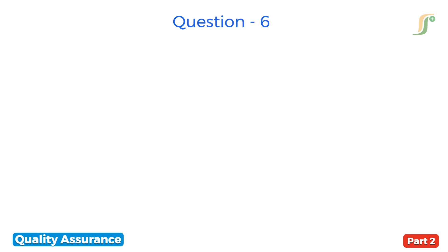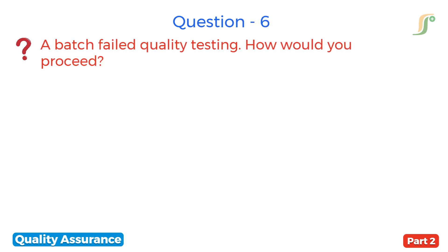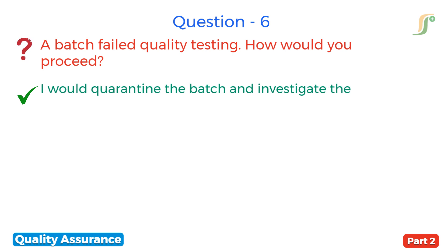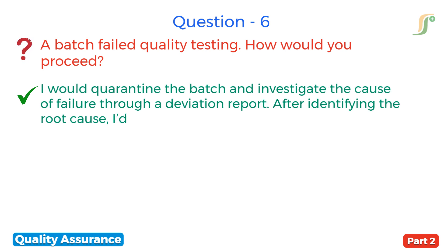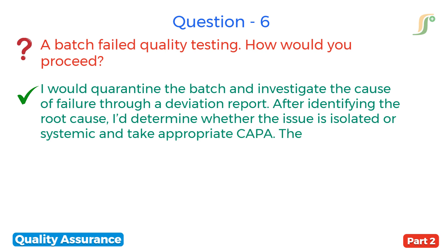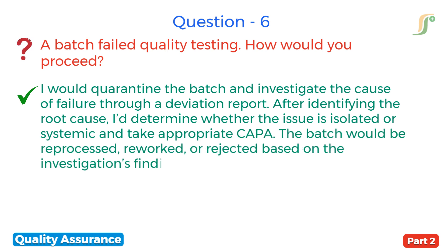The sixth question is: a batch failed quality testing — how would you proceed? I would quarantine the batch and investigate the cause of failure through a deviation report. After identifying the root cause, I would determine whether the issue is isolated or systemic and take appropriate CAPA. The batch would be reprocessed, reworked or rejected based on the investigation's findings.